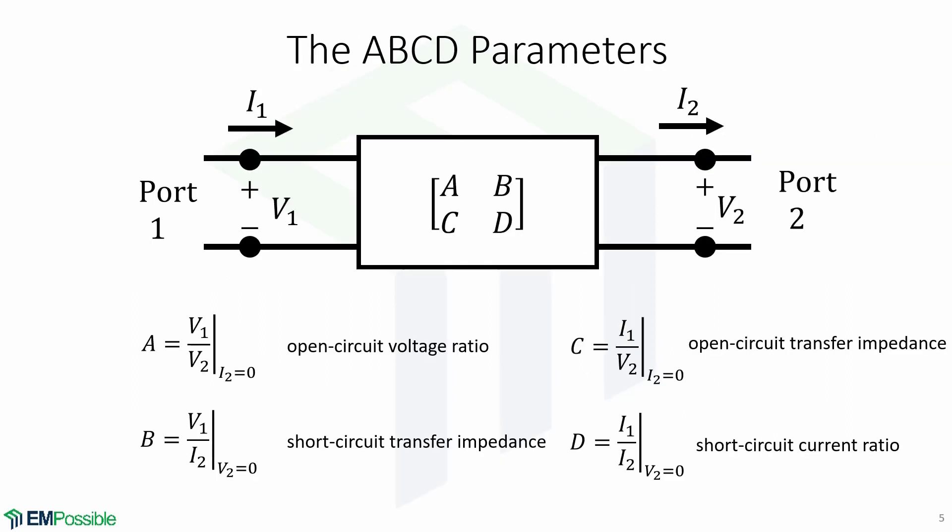Now we will take a look at the ABCD parameters. The first parameter is A, which is equal to V1 over V2 when I2 equals 0, which means that this is the open circuit voltage ratio.